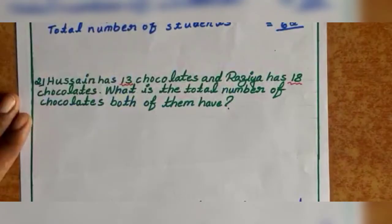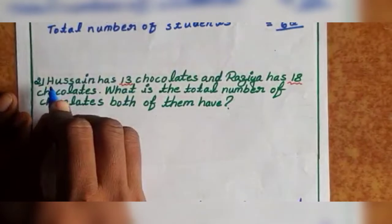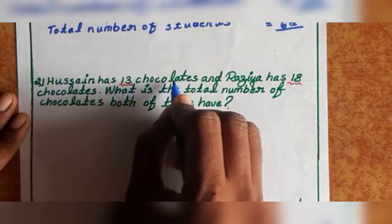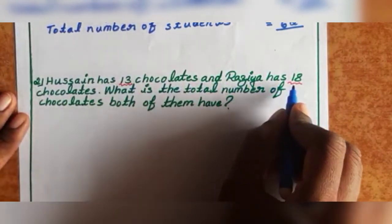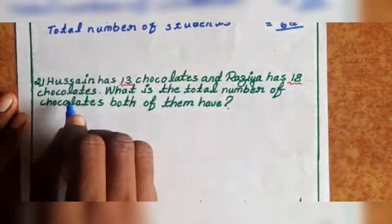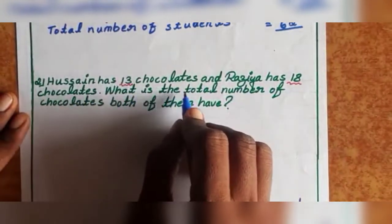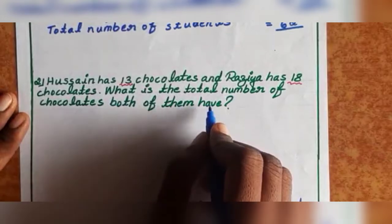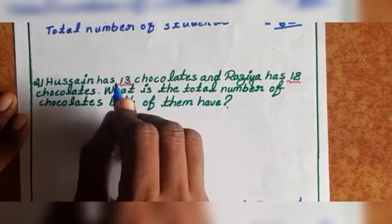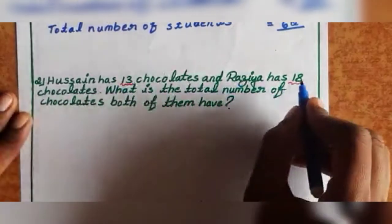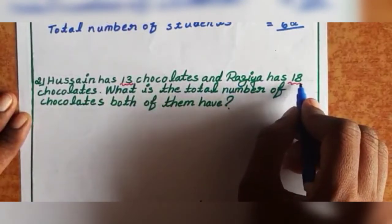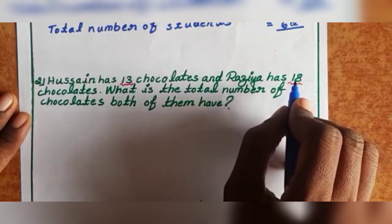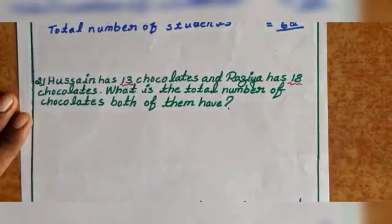Next, second one. Usain has 13 chocolates and Razia has 18 chocolates. What is the total number of chocolates both of them have? So you can add 13 plus 18 to get the answer. First, form the sentence.